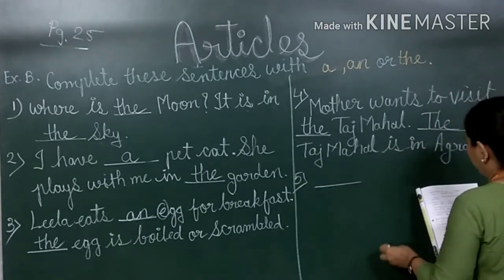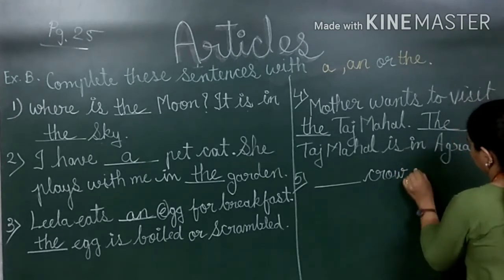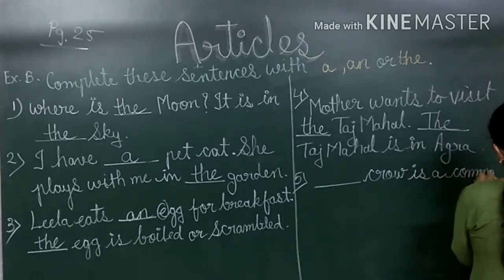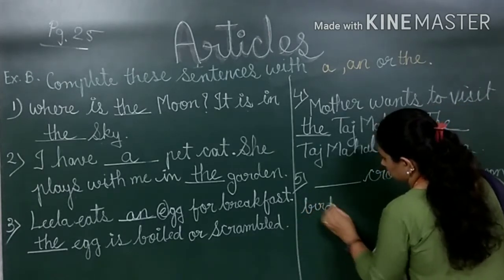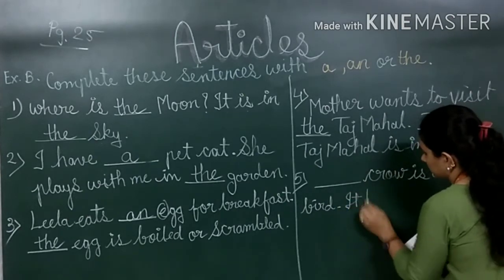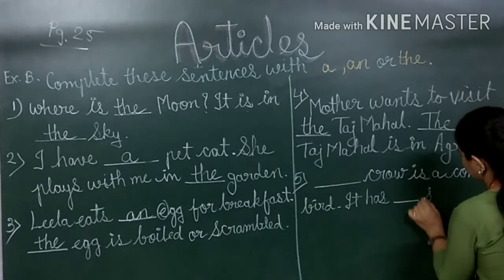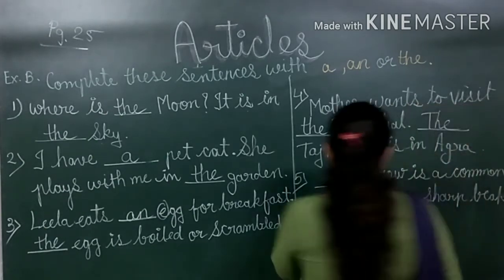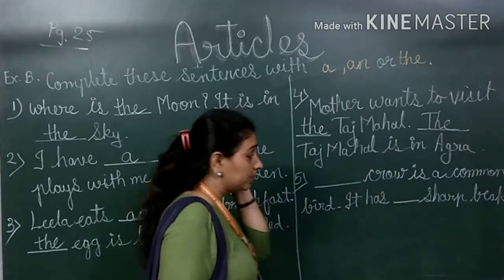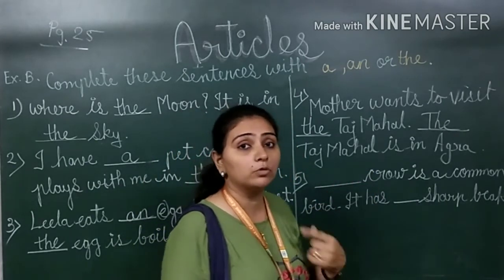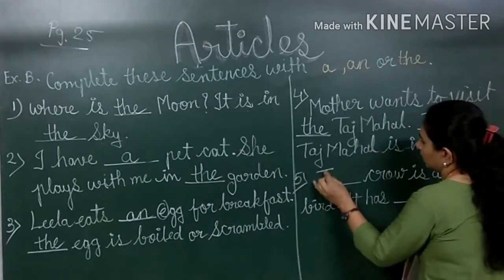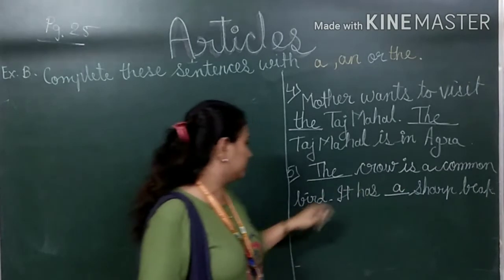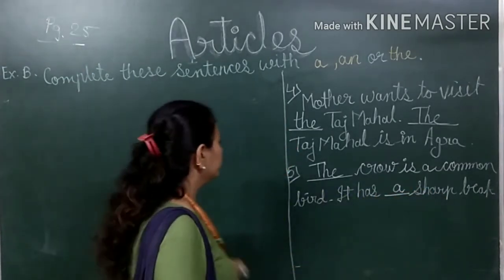Number five is: blank crow is a common bird and has a blank sharp beak. Here they are talking about a particular crow in general, so we use 'the crow'. For 'sharp beak', the word 'sharp' starts with S, a consonant, so we use 'a'. The answer is: The crow is a common bird and it has a sharp beak.